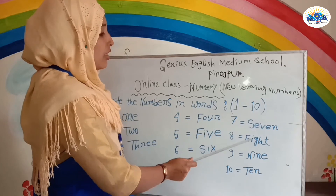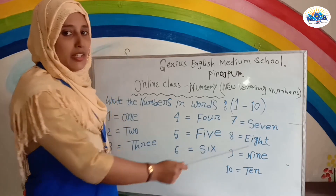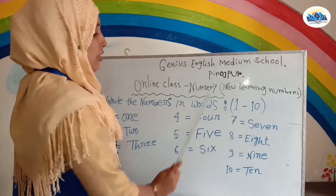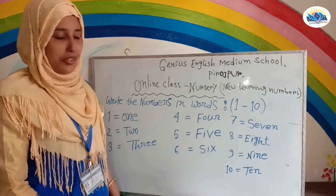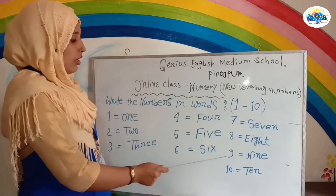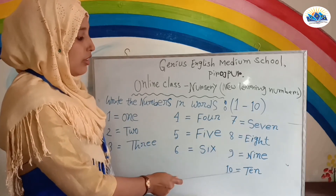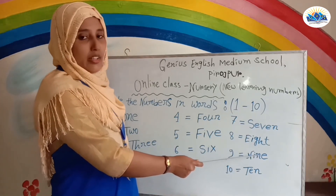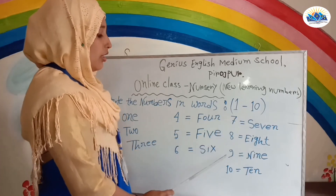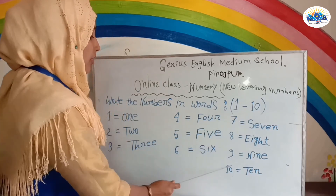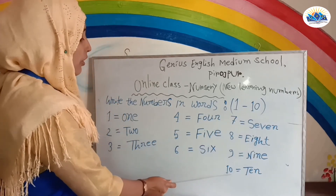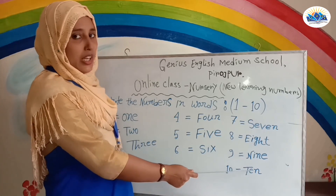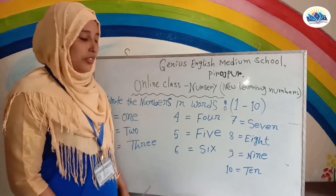Number eight: V-I-Z-S-T. Eight. Number nine: A-N-I-A-E. Nine. Number ten: K-T-E-A-T-E-N.